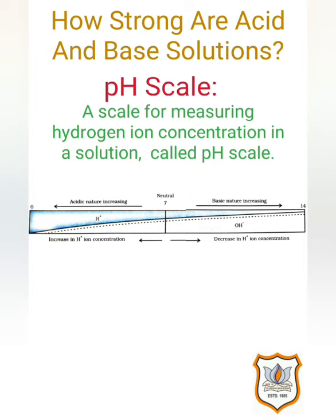A scale for measuring hydrogen ion concentration in a solution is known as the pH scale. The 'p' in pH stands for 'potenz' in German, meaning power. On the pH scale we can measure pH generally from 0, meaning very acidic, to 14, meaning very alkaline or strong base.